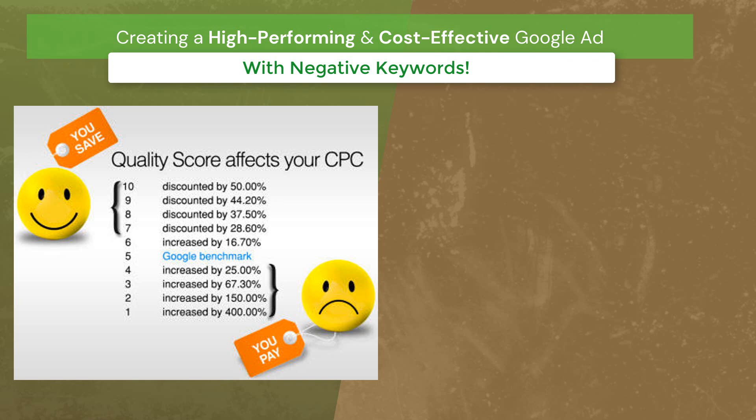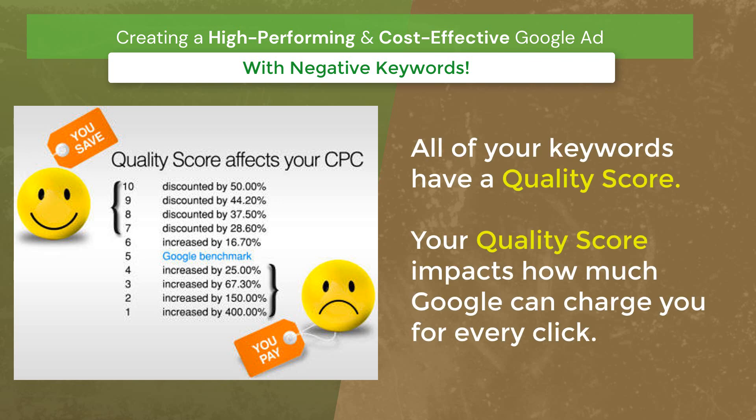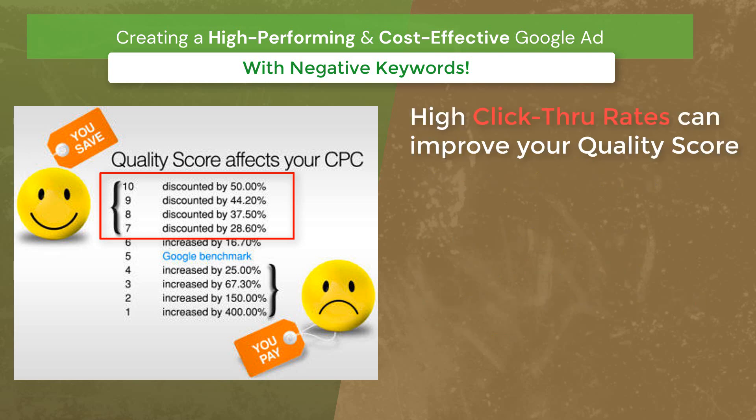Your quality score determines how much Google will charge you for every click. So if you have a good quality score, you pay a lot less per click than if you have a bad quality score. Because negative keywords will prevent your ad from showing up on searches that don't match your ad, this will improve your click-through rate, which also improves your quality score.